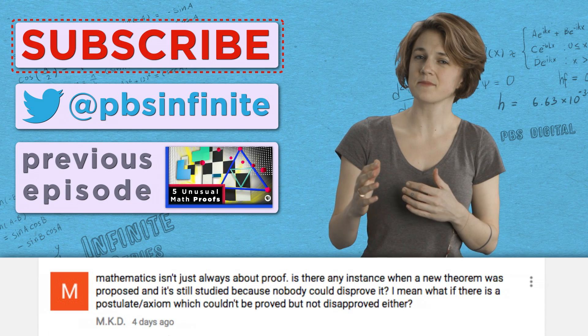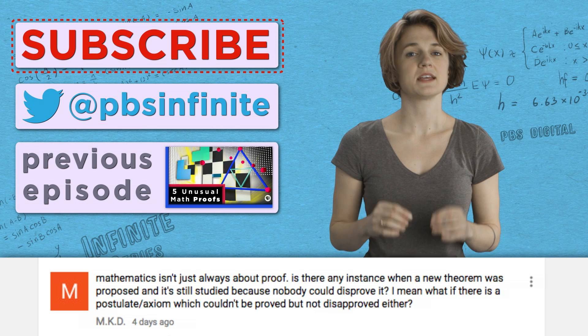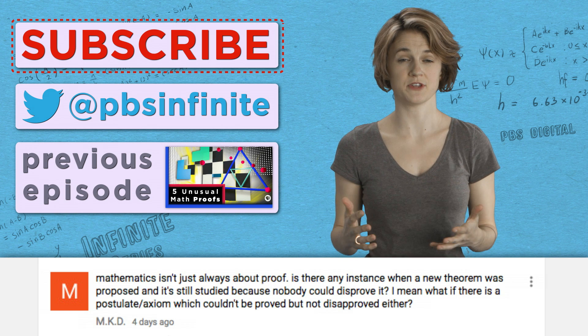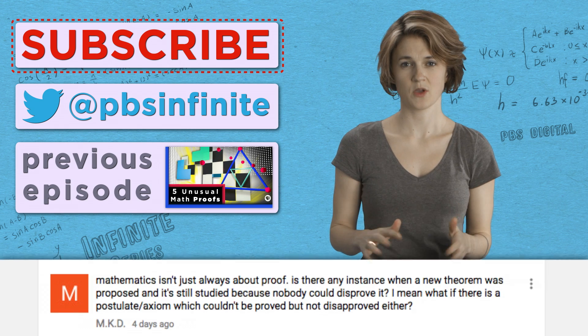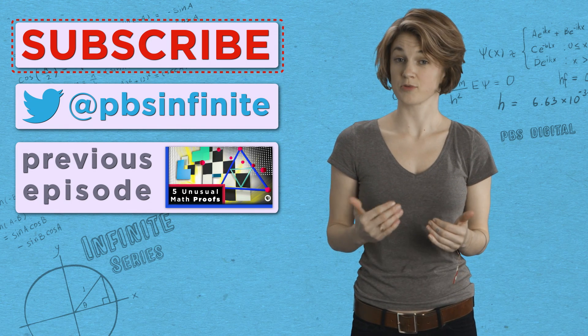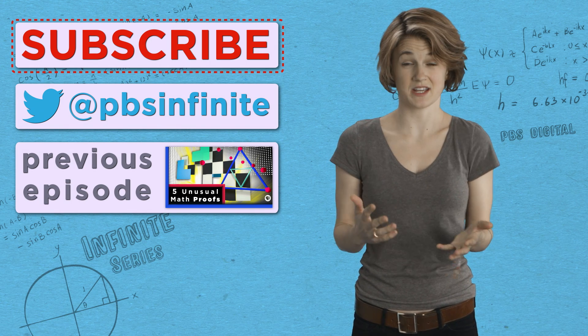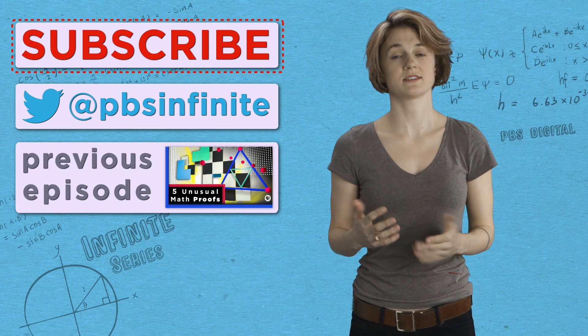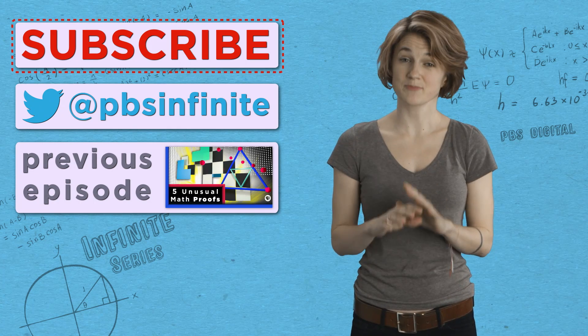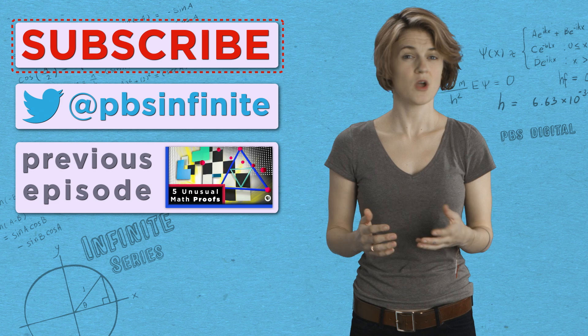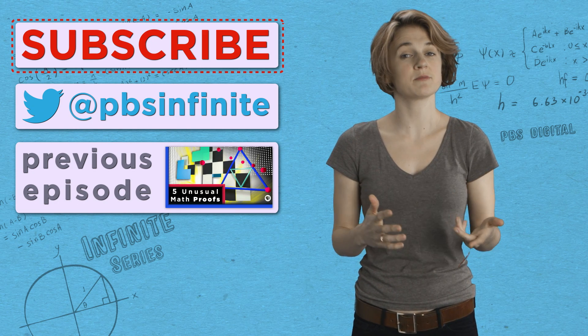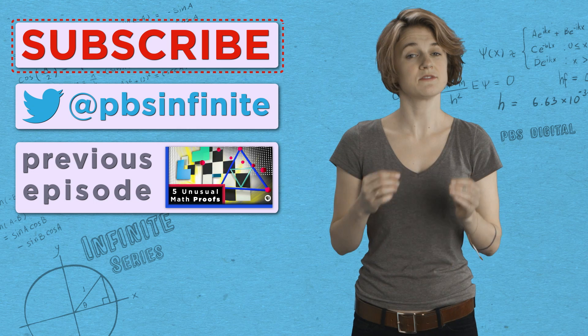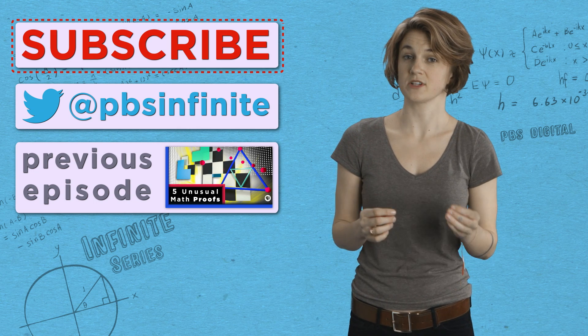MKD asks something related but different. Is there an instance of a proposed new theorem which was still studied even though nobody can prove it? Well, axioms are neither proved nor disproved. They're just taken as given. But there are some other math facts that are still studied despite not having been proven. We don't call them theorems. That label requires a proof. But for example, the Riemann hypothesis is a very well-studied, unproven conjecture.